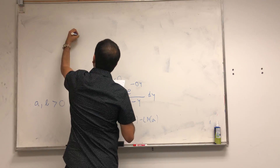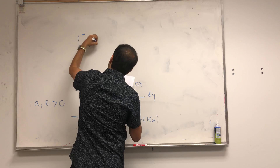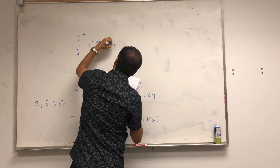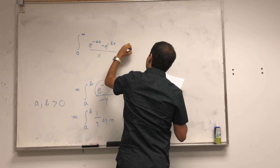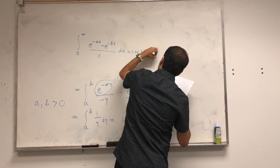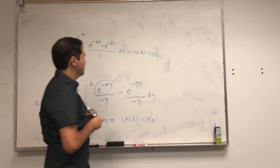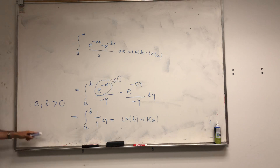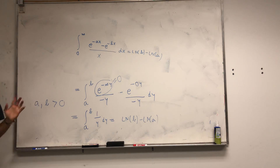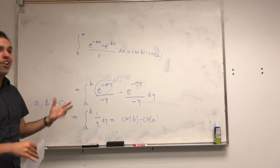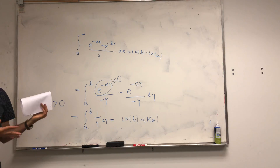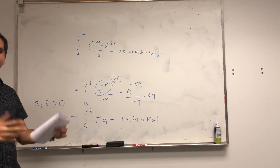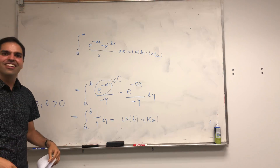So, the integral from 0 to infinity of (e^(-ax) - e^(-bx)) / x dx equals ln(b) - ln(a). Try doing this using single-variable calculus — this is one of the neat things about multivariable calculus: it helps us solve otherwise difficult problems. If you like these integrals and want to see more, please subscribe to my channel. Thank you very much.